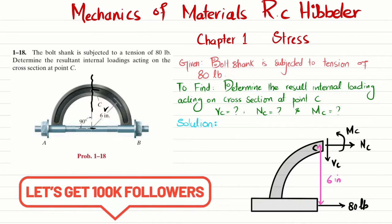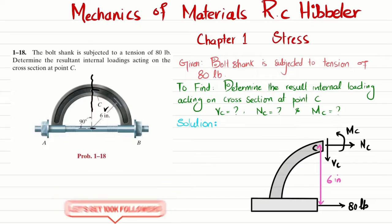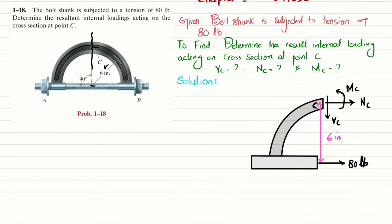Now we will apply equations of equilibrium to find Mc, Nc, and Vc. The first equation of equilibrium is that the sum of all forces along the x direction must equal zero, with force in this direction taken as positive. The only horizontal force is Nc.